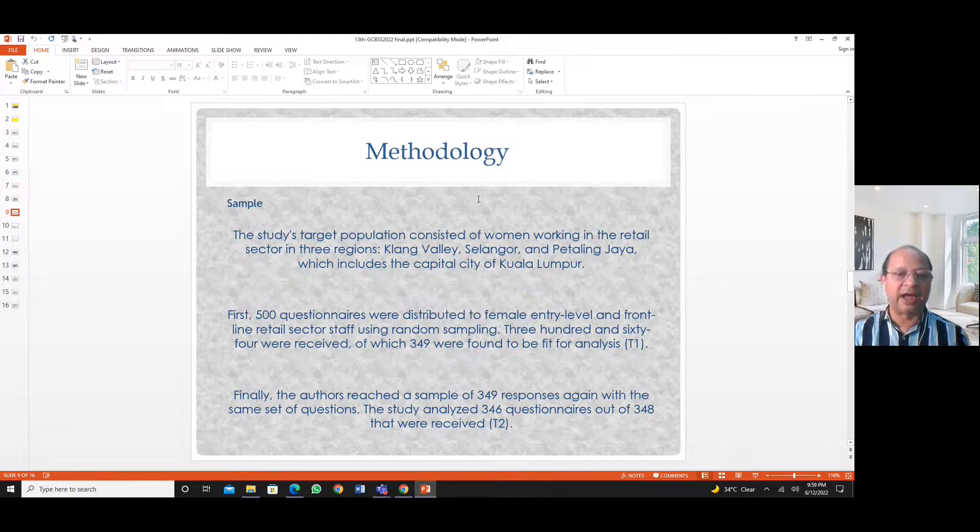Basically from Malaysia, 500 questionnaires were distributed to female entry-level and frontline retail staff using random sampling. 364 were received and 349 responses were found to fit for analysis at time one. Similarly, 348 were received at time two, and 346 responses were found to be appropriate for analysis.